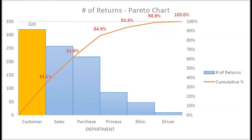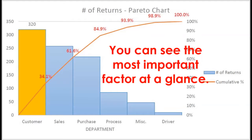This is a Pareto chart. Since this chart sorts data in frequency order of occurrences, you can see the most important factor at a glance.